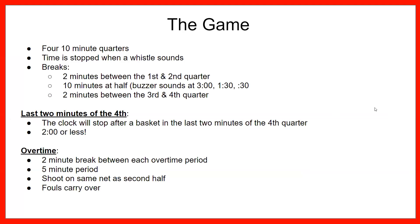A typical high school game is 10-minute quarters — four of them. Time is stopped when the whistle sounds, so it's not straight time. We have two minutes between the first and second quarter, 10 minutes at halftime, and the same process with buzzer sounds at three, 1:30, and 30 seconds. Then two minutes between the third and fourth quarter.